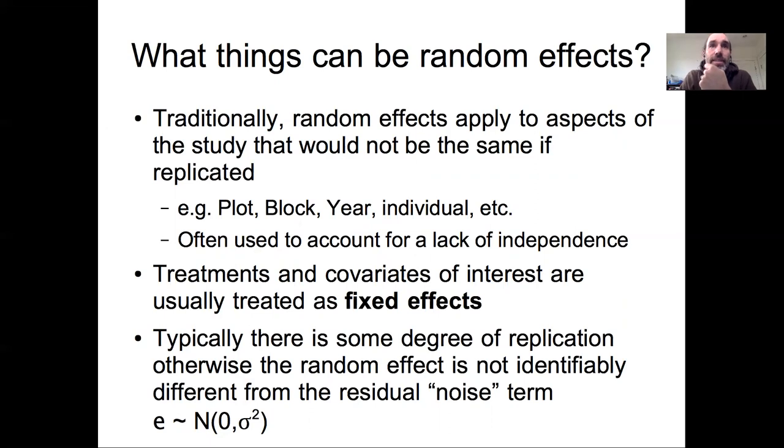By contrast, things like experimental treatments or covariates of interest are usually treated as what we call fixed effects. If you repeated the experiment again you would have the same experimental manipulations or you'd have the same covariates in an observational study. They are the key parts of our process model that still stay part of the process model.